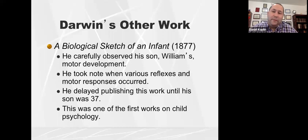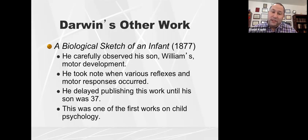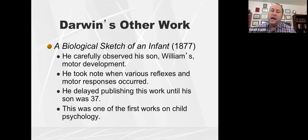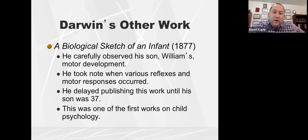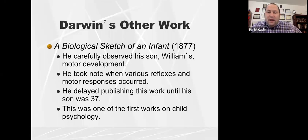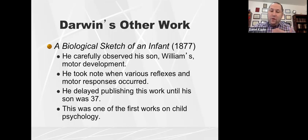Darwin didn't just talk about evolution — he was interested in developmental psychology as well. In a biological sketch of an infant, he used careful observation to describe his son's motor development and how reflexes and motor responses occurred. He waited until his son was 37 to publish this, just in case there was some kind of embarrassment. Nevertheless, the biological sketch of an infant is one of the earliest child psychology works.